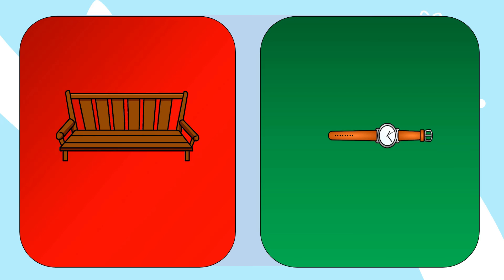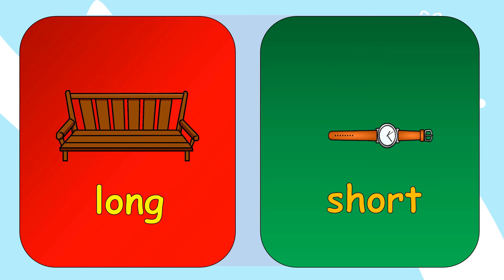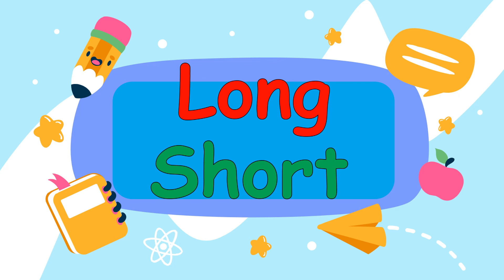And last, let's identify the length of a bench and a watch. Which one is long? You point on the screen. Great job! It's the bench. How about the short one? Good job! It's the watch. So kids, don't forget our lesson for today. We learned about long and short. We use these words to tell the length of objects.